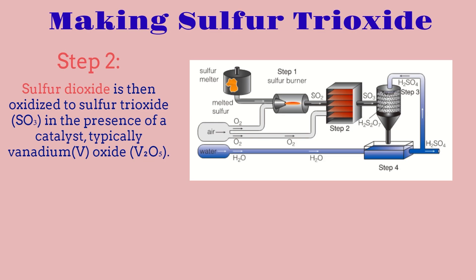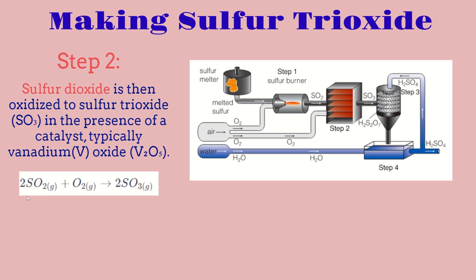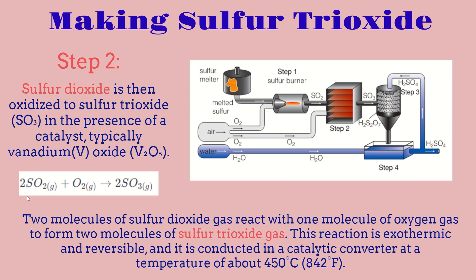For step 2, this is where we actually create sulfur trioxide. Sulfur dioxide from the tunnel is oxidized to sulfur trioxide in the presence of a catalyst, typically vanadium oxide. Two molecules of sulfur dioxide gas react with one molecule of oxygen to form two molecules of sulfur trioxide gas. This reaction is exothermic and reversible, conducted inside a catalytic converter at a temperature of about 450 degrees Celsius.